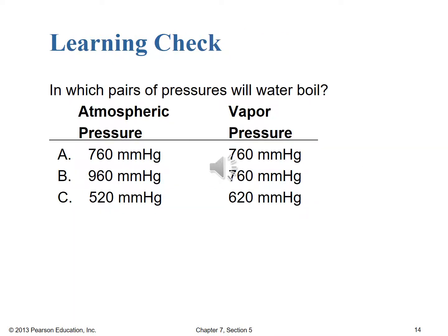Before we leave this section, let's end with a final learning check. You're asked which pairs of atmospheric pressure and vapor pressure will cause water to boil. We have three options — A, B, and C — each with different atmospheric and vapor pressure values. Stop the video, make your selection, then start back up.